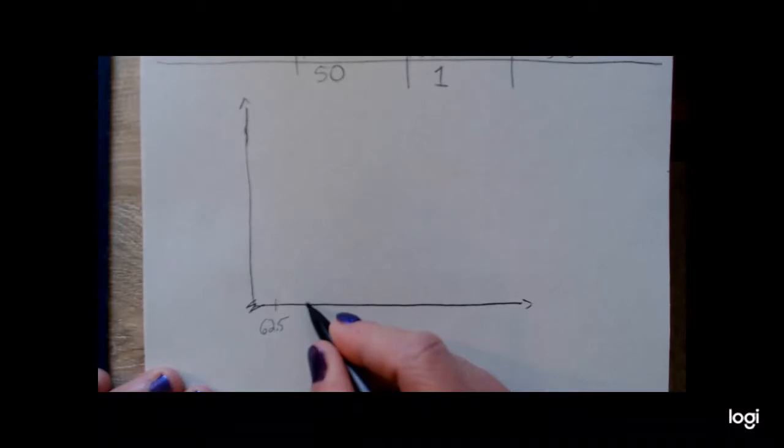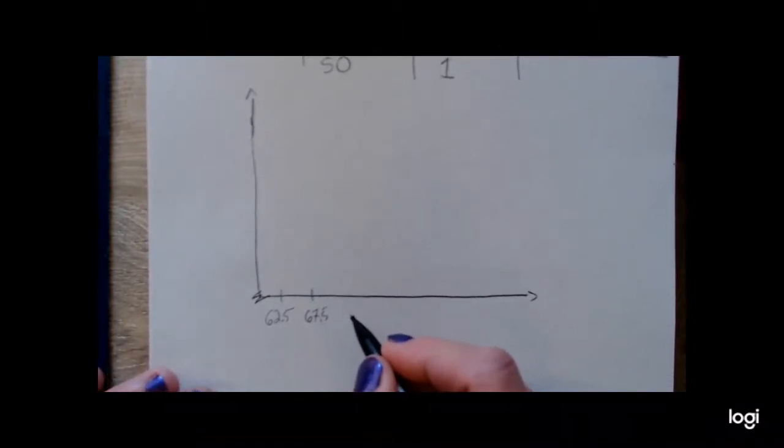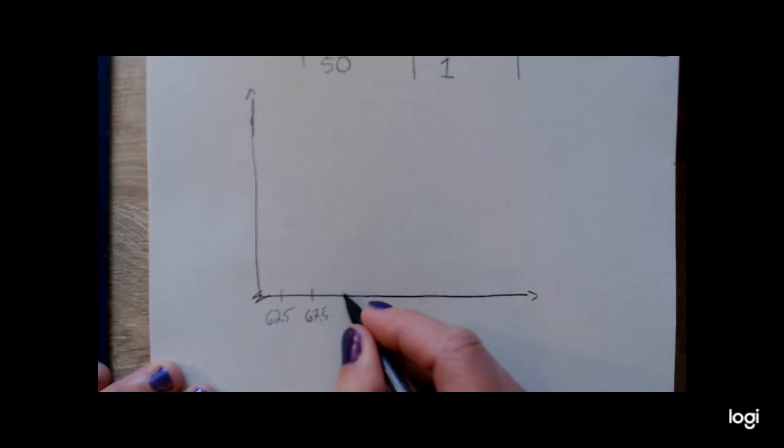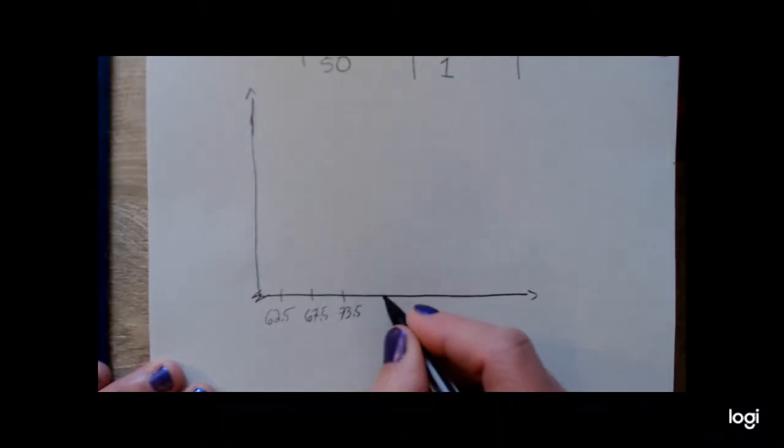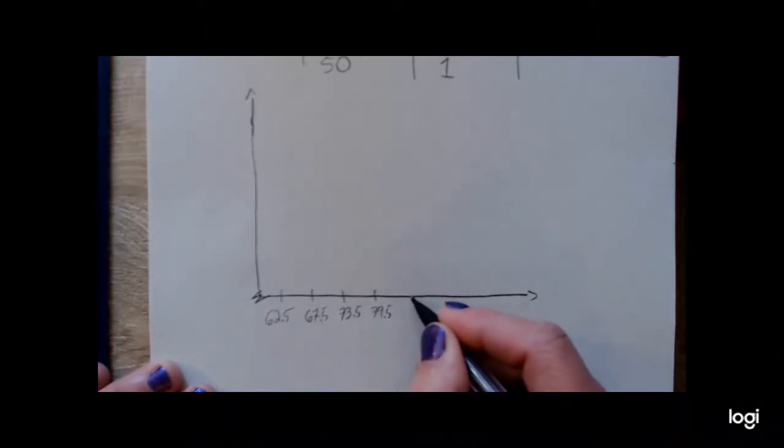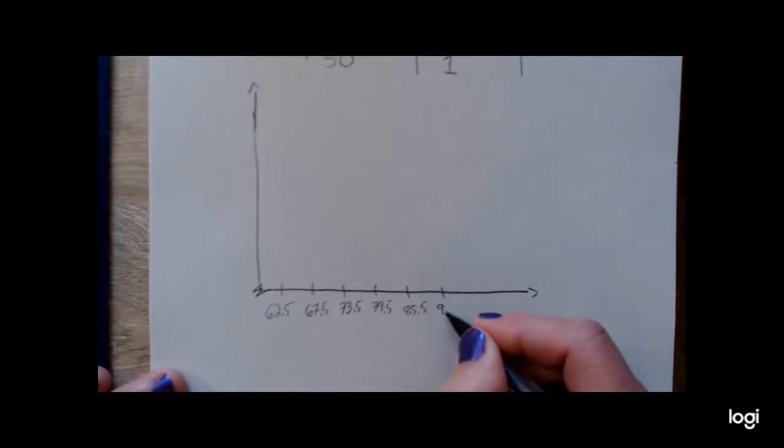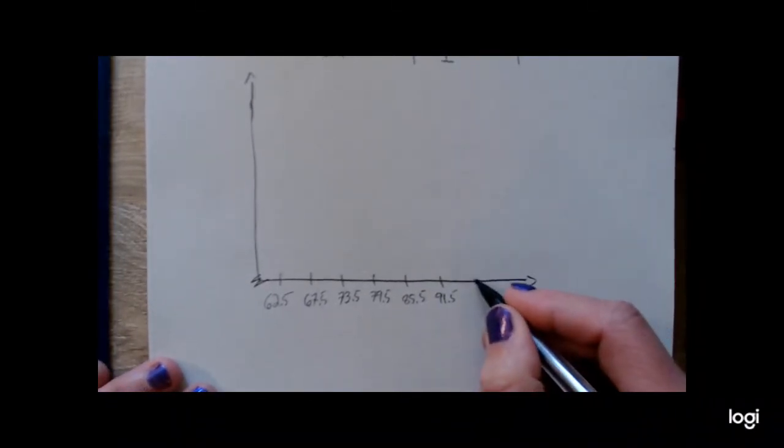My second tick mark will be 67.5, and you want to kind of try to make these equally spaced. I'm not the best artist, so these are actually kind of tricky for me to do by hand. And then my next tick mark will be 73.5, my next tick mark will be 79.5, my next tick mark will be 85.5, and then 91.5, and then 98.5.